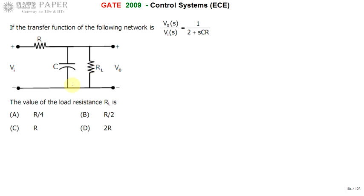Looking at this network, the capacitance and resistance are in parallel, so we can replace them with a single impedance Z. The capacitive reactance Xc is 1/sC.